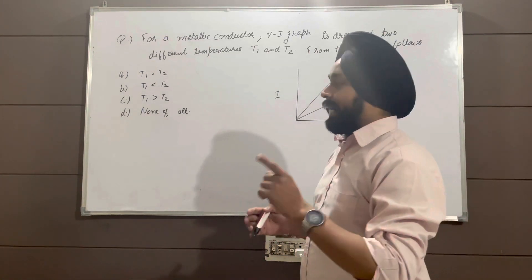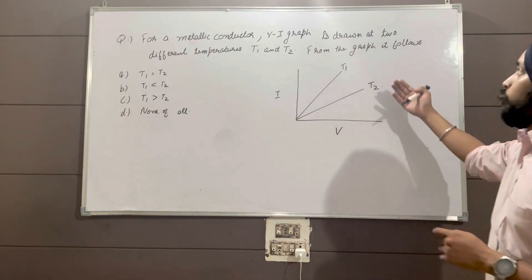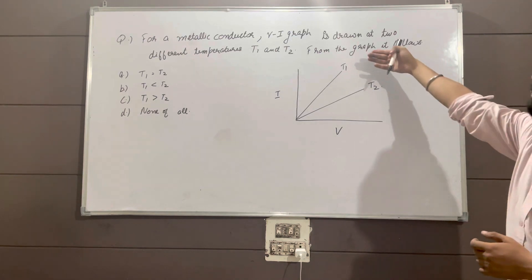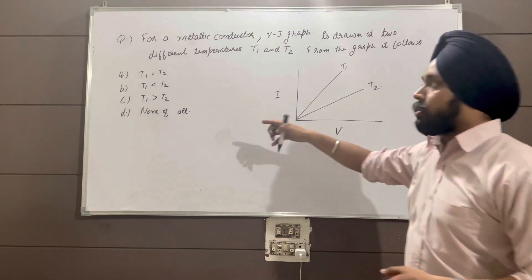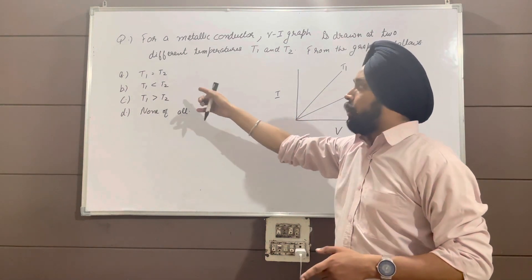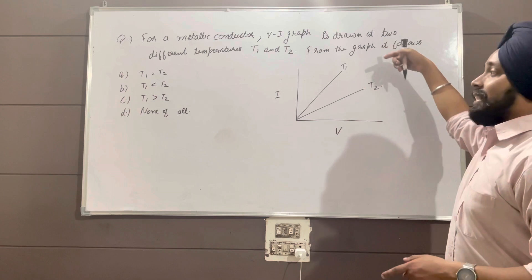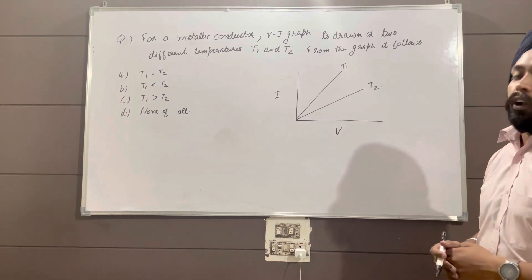So the question is, for a metallic conductor, a VI graph is drawn at two different temperatures, T1 and T2. From the graph, it follows: T1 is equal to T2, T1 is less than T2, T1 is greater than T2, or none of all.